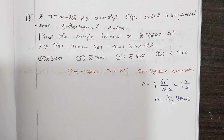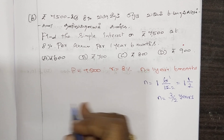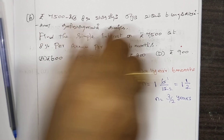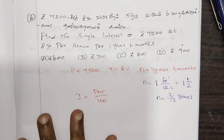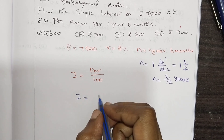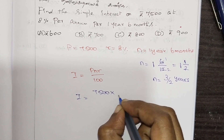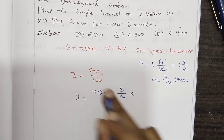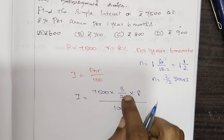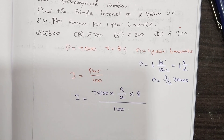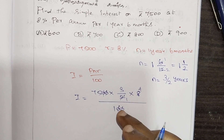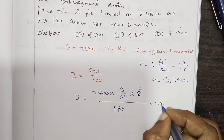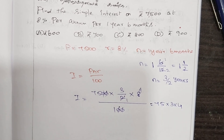This sum uses the formula I equal PNR by 100. Now substitute: principle, N, R. You can substitute and simplify — add zeros, divide. Working out: we have 75 and 12.